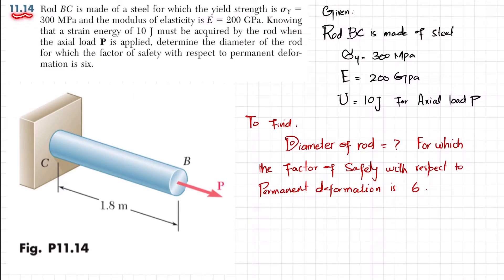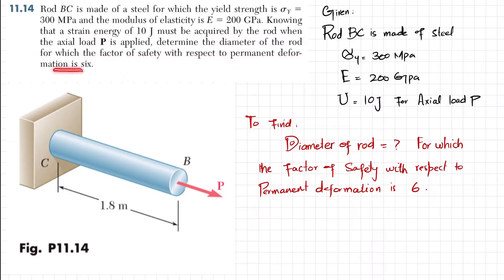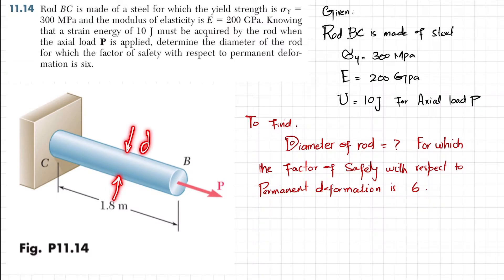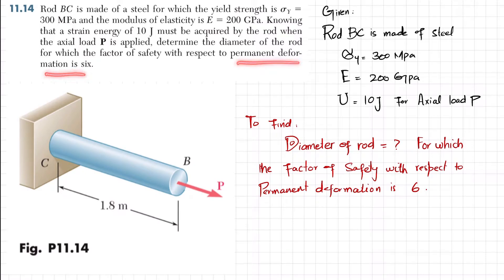Welcome back. Problem 11.14: rod BC is made up of steel for which yield strength is 300 megapascal and modulus of elasticity E is 200 gigapascal. Knowing that a strain energy of 10 joule must be acquired by the rod when axial load P is applied, determine the diameter of rod for which the factor of safety with respect to permanent deformation is 6. The total length is 1.8 meter. Let's start and solve this problem.